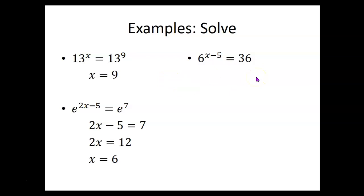How about this: 6 to the x minus 5 power equals 36. Now 36 is a power of 6, 36 is 6 to the 2 power. So we've got 6 to the x minus 5 power on one side of the equal sign and 6 to the 2 power on the other side, and the only way those can be equal is if x minus 5 equals 2. And from there, add 5 to both sides, x equals 7.